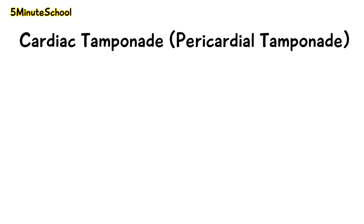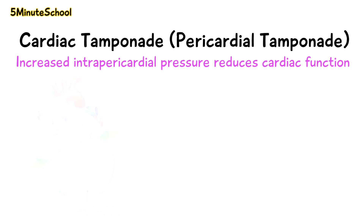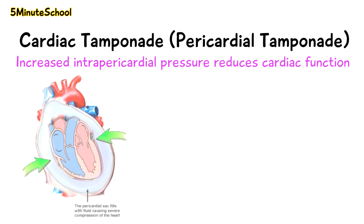Cardiac tamponade is when the intra-pericardial pressure builds up so high due to pericardial effusion that it starts to affect cardiac function. The fluid build-up occurring in the pericardial space is contained by the outer fibrous layer of the pericardium, resulting in reduced contractility of the ventricles.